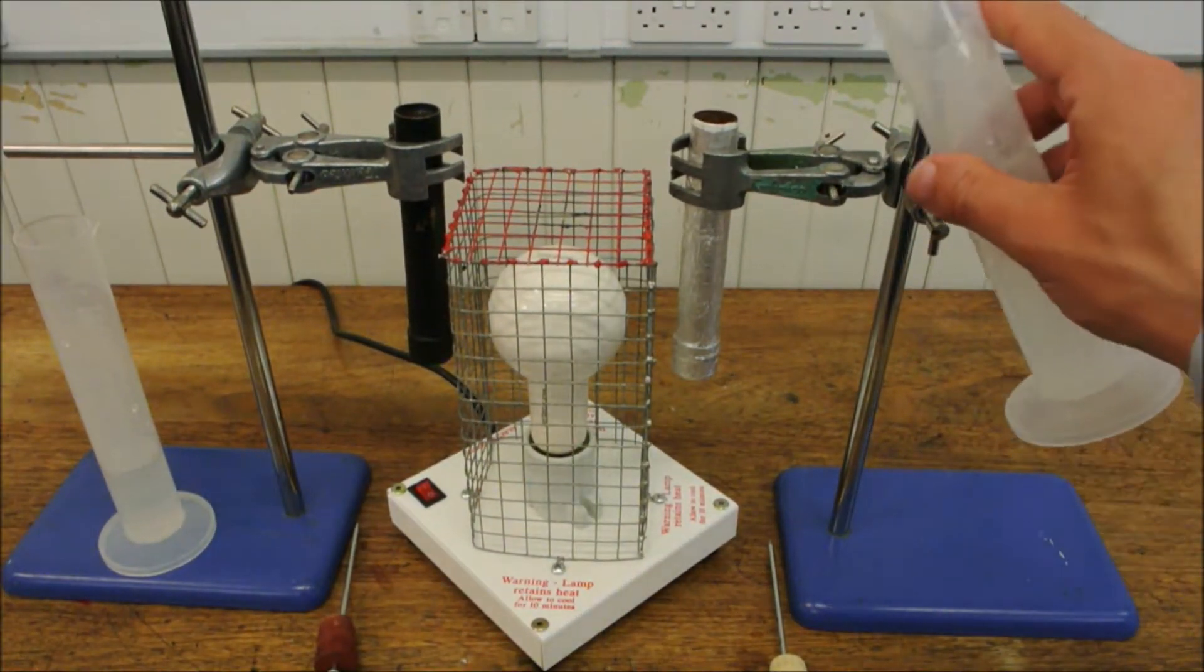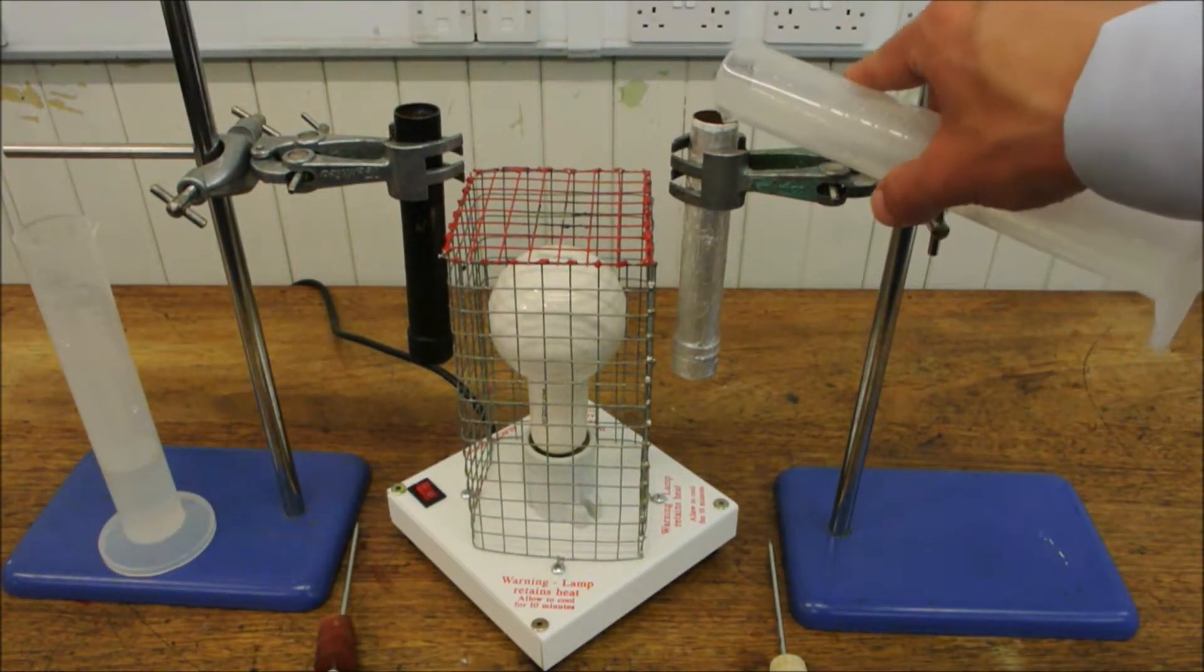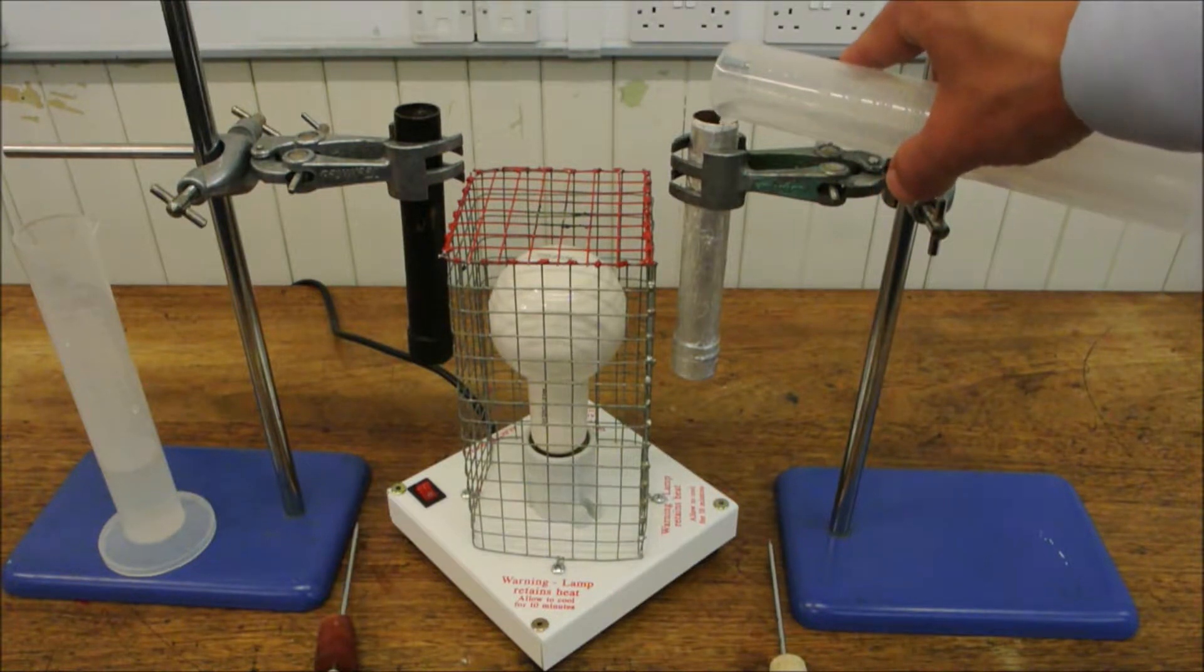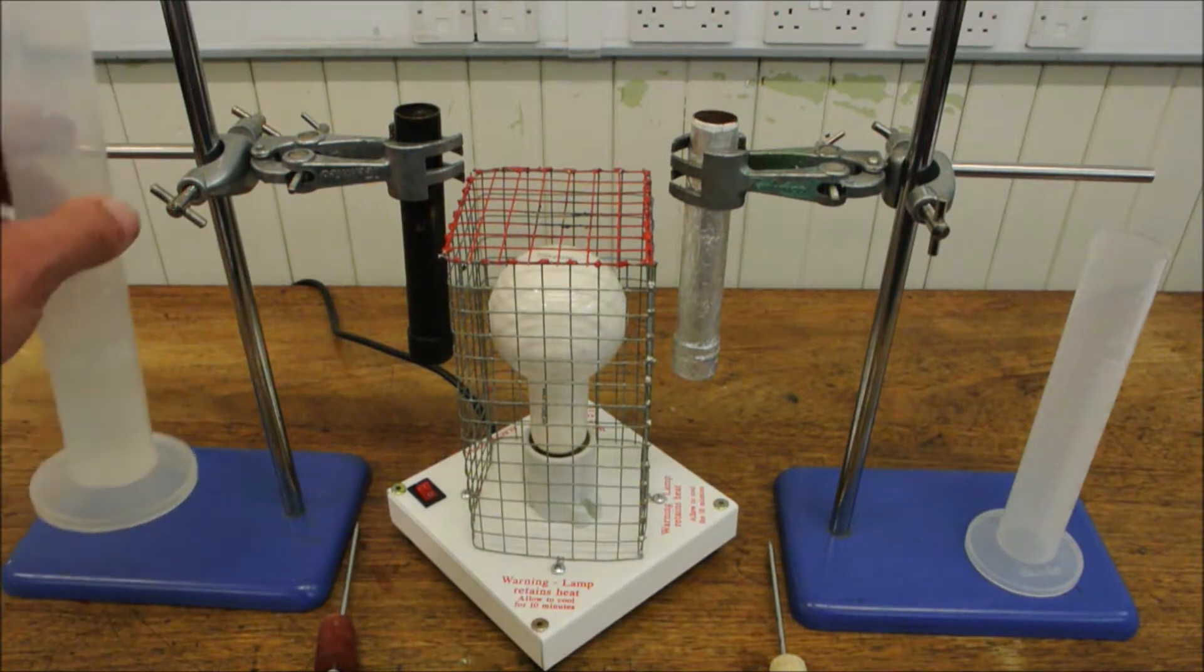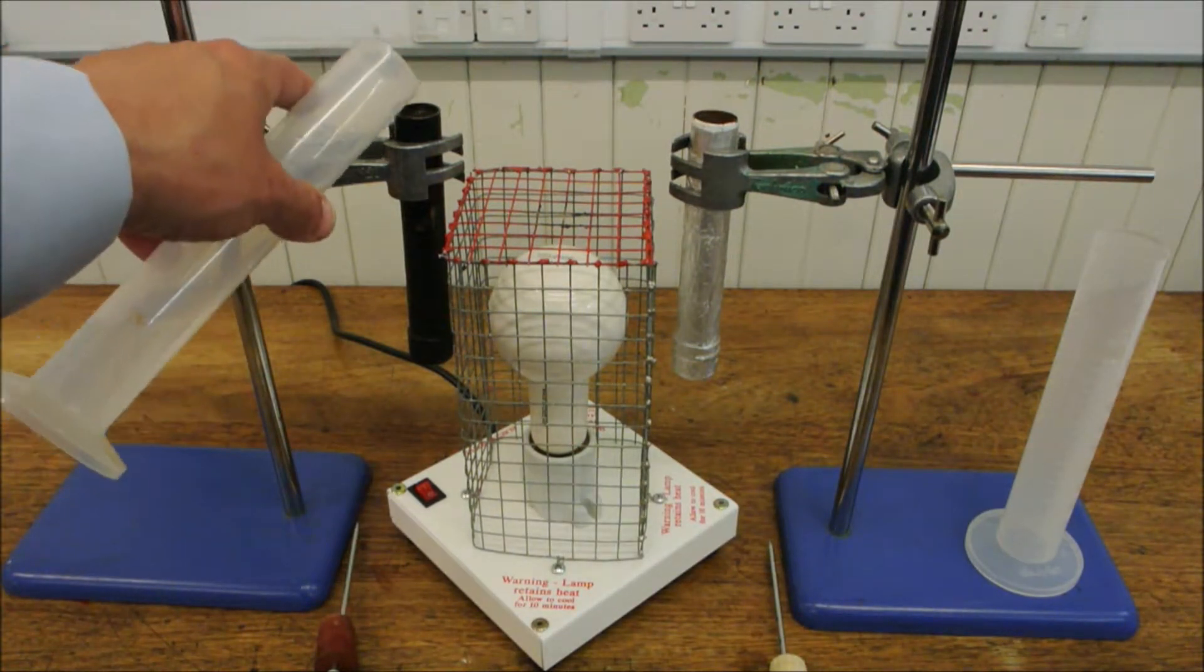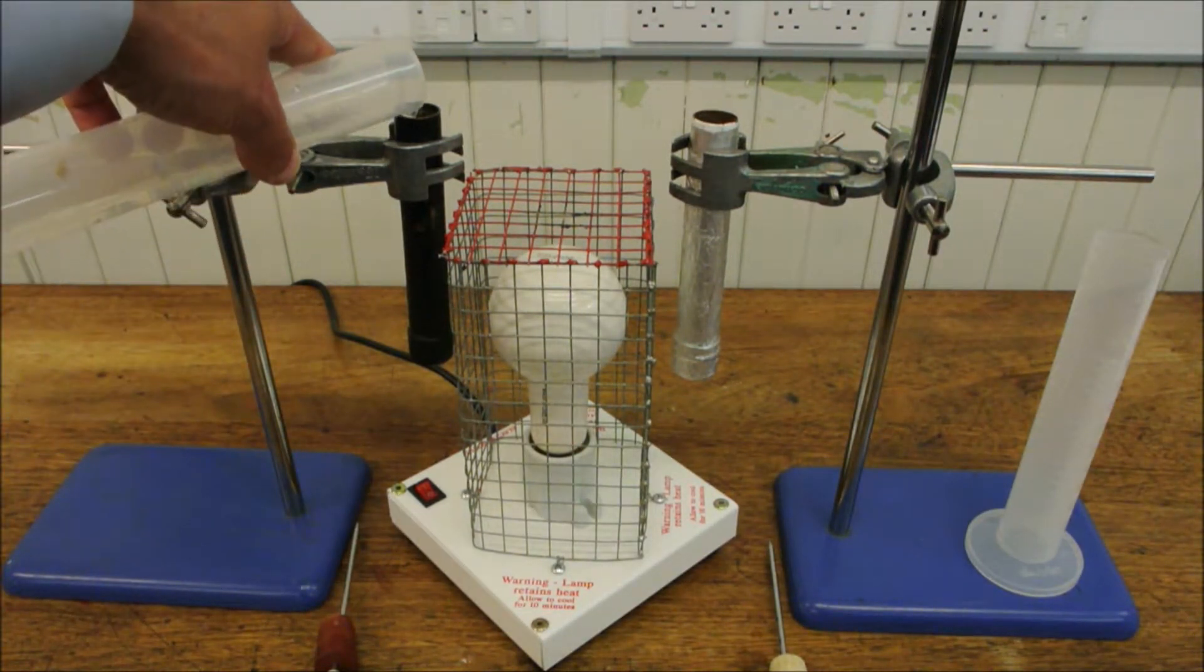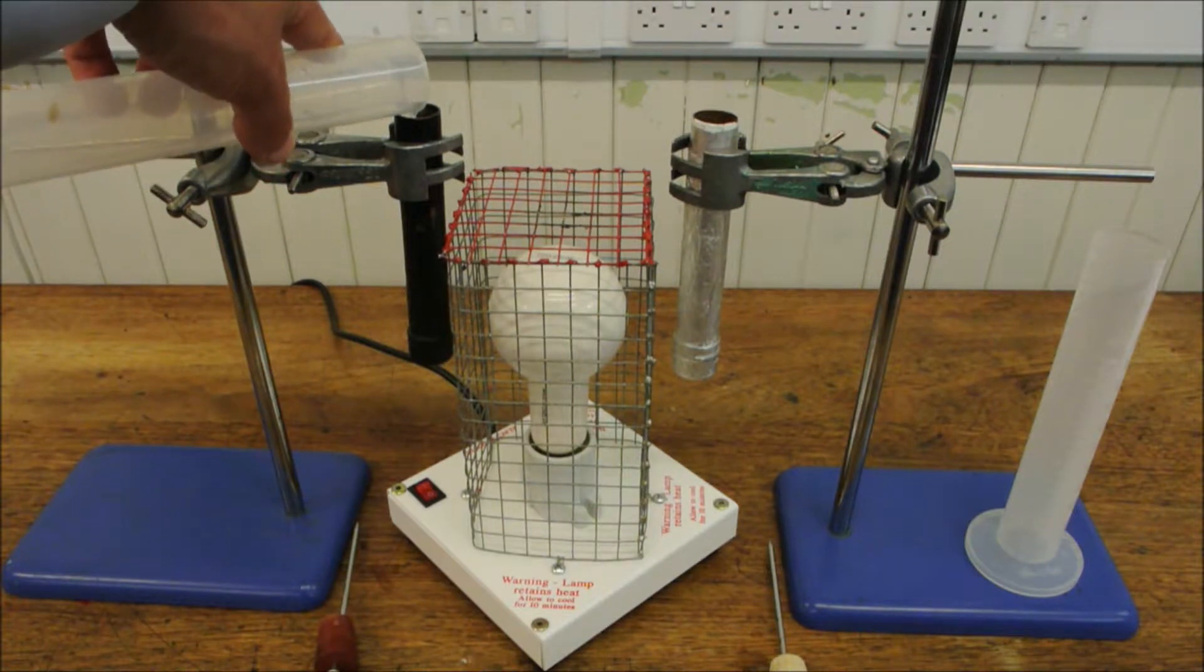I'm going to fill up both of these metal cylinders with the same quantity of cold water. We've got 38cm3 of water going into the tube covered in aluminium foil and the same quantity of water going into the tube that's been painted matte black.